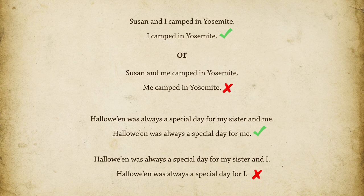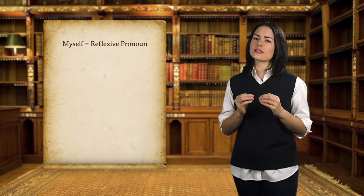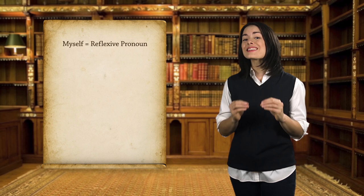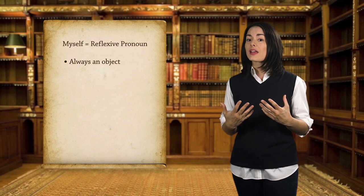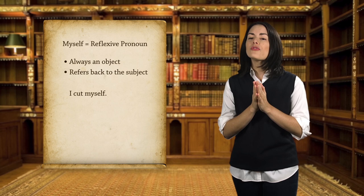Whatever you do, don't use 'myself' instead of 'I' or 'me.' Don't do it. 'Myself' is a very special word, very commonly abused and misused. 'Myself' is an example of a reflexive pronoun. Reflexive pronouns are always objects, never subjects. What's more, they always refer back to the subject. Here's an example: 'I cut myself.' This is something you did to yourself. You use 'myself' when you are the object of your own action.